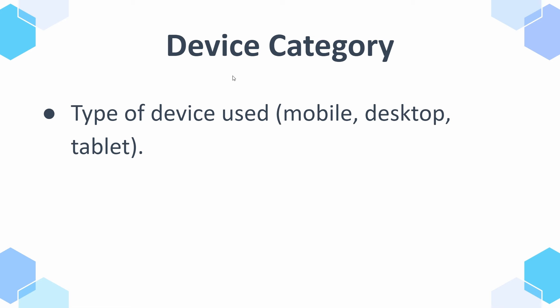And then we have device category, where you can split your traffic by mobile, desktop, and tablet. I want to mention this so you know how it's called, because when you're analyzing data there's a big difference between user behavior on mobile and desktop.